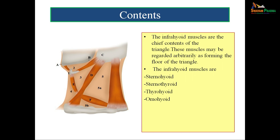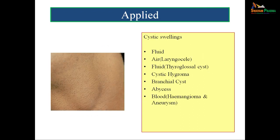The chief contents of the anterior triangle of the neck are the infrahyoid muscles — sternohyoid, sternothyroid, thyrohyoid, and omohyoid — which may be regarded as forming the floor. The 9th to 12th cranial nerves pass through this anterior triangle, the lymph nodes are present, and the blood vessels including the carotids are there. No structure can be ignored because every structure has vital clinical importance.